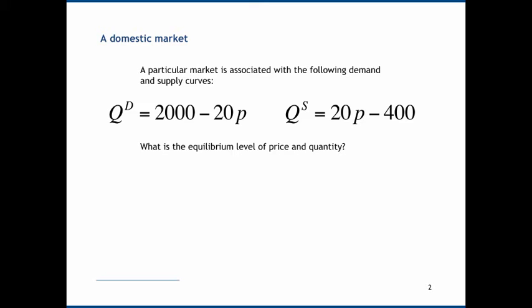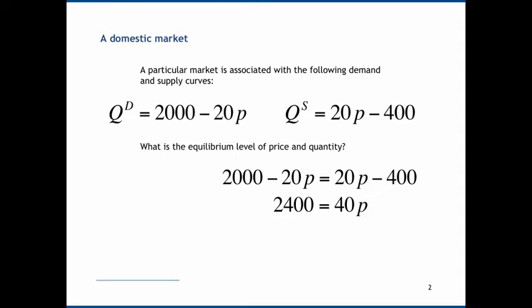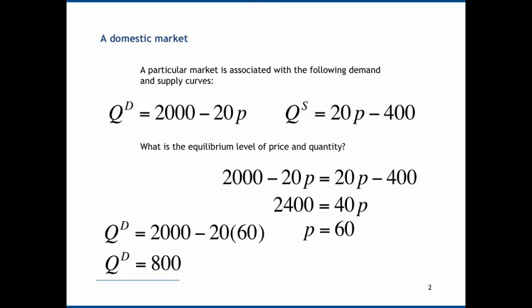First, we need to establish the equilibrium price and quantity. We can do this by setting demand equal to supply, because in equilibrium demand and supply will be equal. Setting these two equations equal and solving for p, we find that p is equal to 60. Plugging that back into the demand equation — qd equals 2000 minus 20 times p — gives us quantity demanded of 800. So equilibrium price is 60 and quantity is 800.